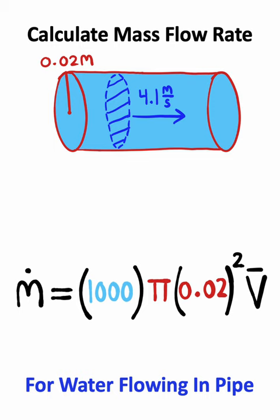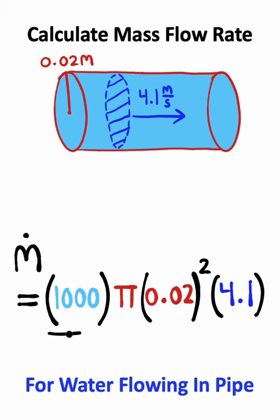Lastly, we need to plug in the magnitude of velocity, which is 4.1 meters per second. So we have a thousand times pi times 0.02 squared times 4.1.